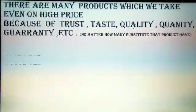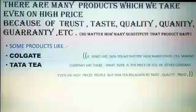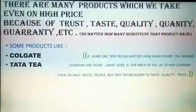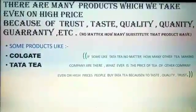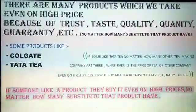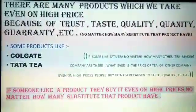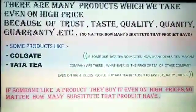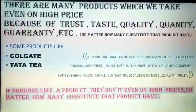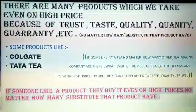We tend to use that product even at high prices. From the pie chart, we can also conclude that there are many goods which we buy even at high prices because of trust, taste, quantity, guarantee, and so on — no matter how many substitutes that product has.